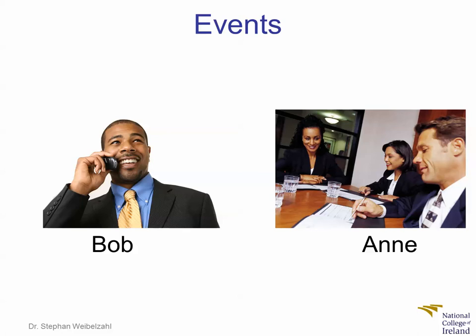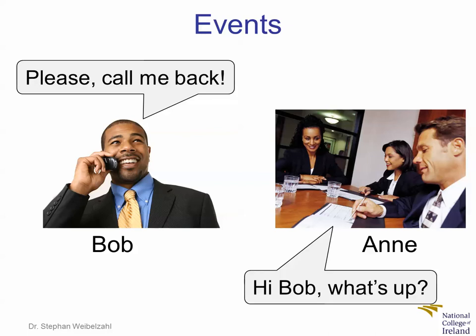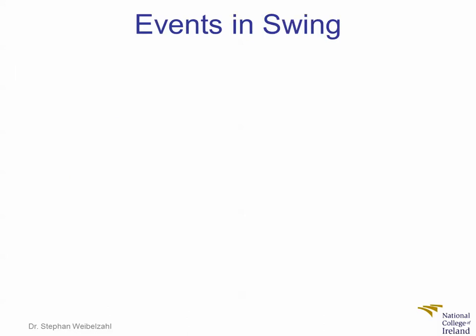So this is what actually also happens in Swing, and I will introduce this in a minute. Just going through the structure again: Bob would now actually leave that message, 'please call me back,' when the event occurs. Anne can ring Bob and say, 'Hi Bob, what's up?' And looking at the same structure now in Swing, we will see that that's exactly what's happening in Swing.